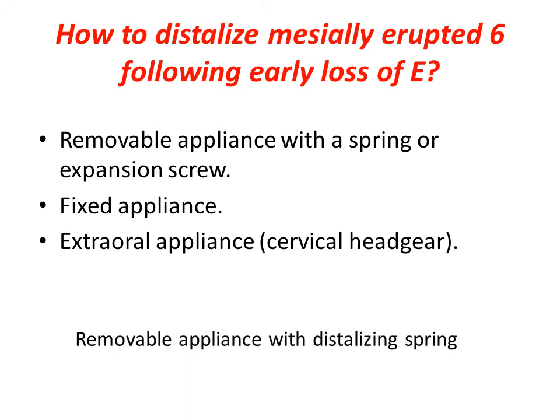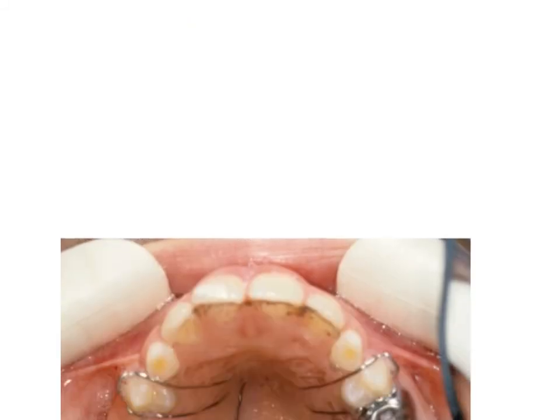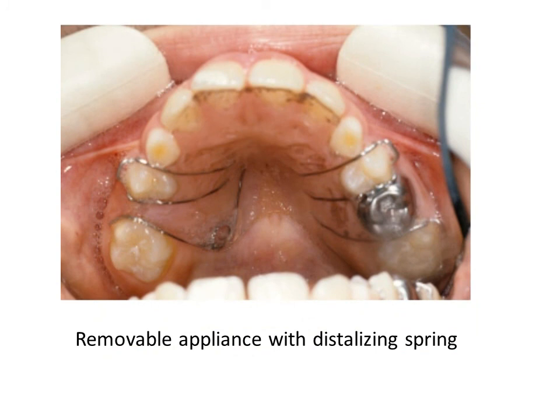Here is a removable appliance with a sliding spring — a finger spring — to distalize the sixth and create space for the unerupted second premolar.